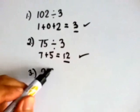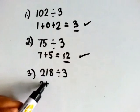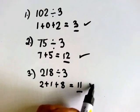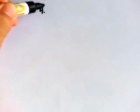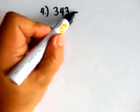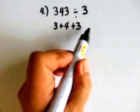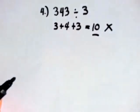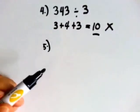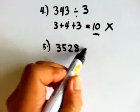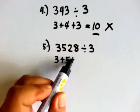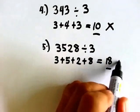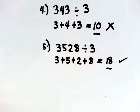Is 218 divisible by 3? Let's add the digits: 2 plus 1 plus 8 equals 11. 11 is not in the multiplication table of 3. So 218 is not divisible by 3. Is 343 divisible by 3? 3 plus 4 plus 3 equals 10. 10 is not in the multiplication table of 3. So 343 is not divisible by 3. Is 3528 divisible by 3? 3 plus 5 plus 2 plus 8 equals 18. 18 is in the multiplication table of 3. So yes, 3528 is divisible by 3.